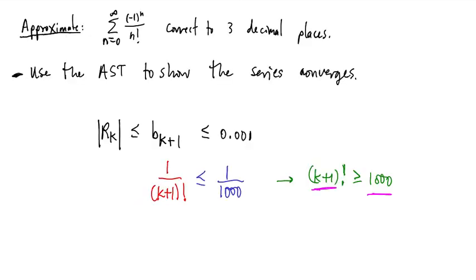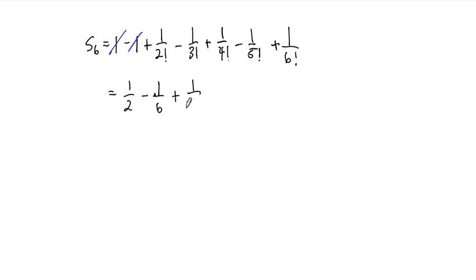So let's write this out and add it up. s_6 is going to be equal to - remember, in our series this is (-1)^n, so it starts with a positive term - 1 - 1 + 1/2! - 1/3! + 1/4! - 1/5! + 1/6!. That's all we have to add up. Of course, these first two cancel. Everything else we can write as fractions: 1/2 - 1/6 + 1/24 - 1/120 + 1/720.